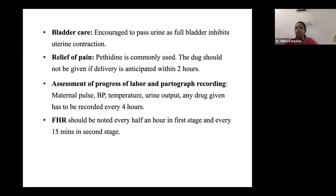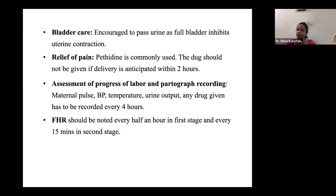FHR should be auscultated immediately after a contraction passes, for a full 60 seconds — not 15 seconds multiplied by four. Do not check FHR at the peak of a contraction when it normally dips. The second method of monitoring FHR is the CTG (cardiotocography) machine, which gives a continuous graph of contractions and fetal heart rate. The CTG graph should be reviewed at least every 30 minutes to assess for decelerations, accelerations, and baseline heart rate.